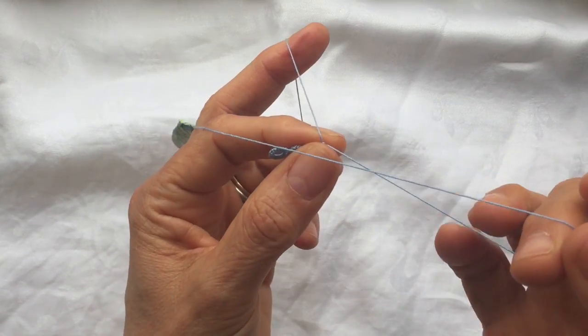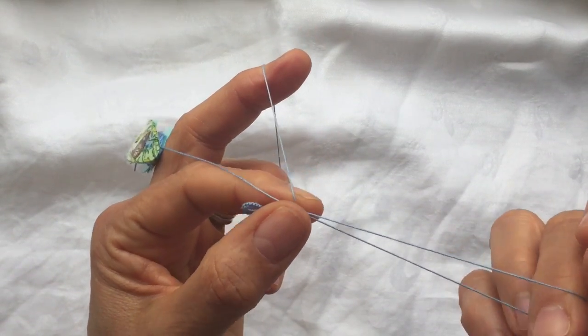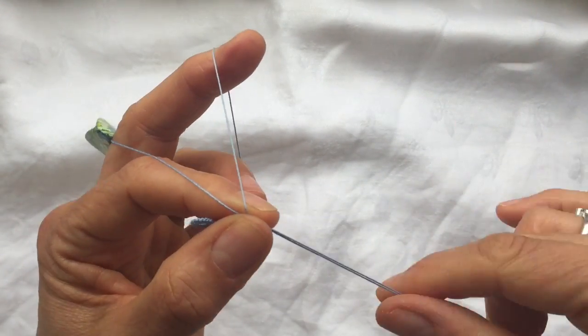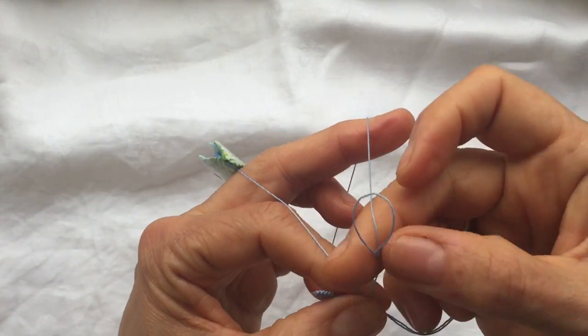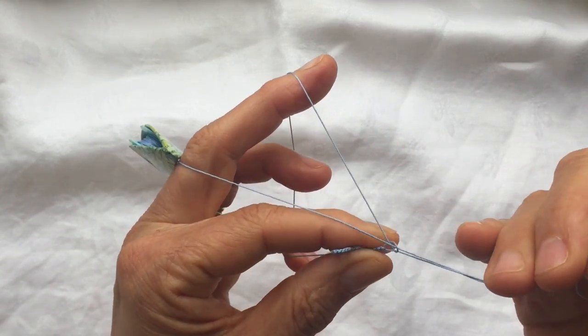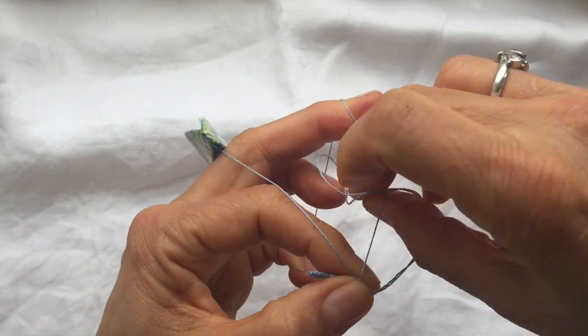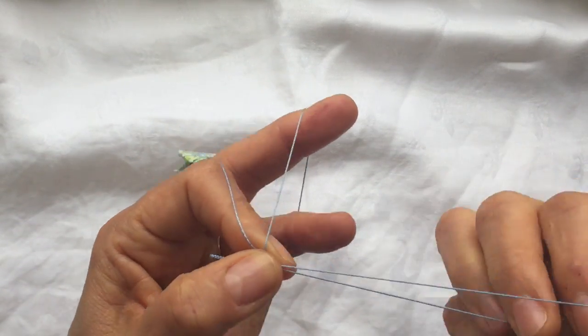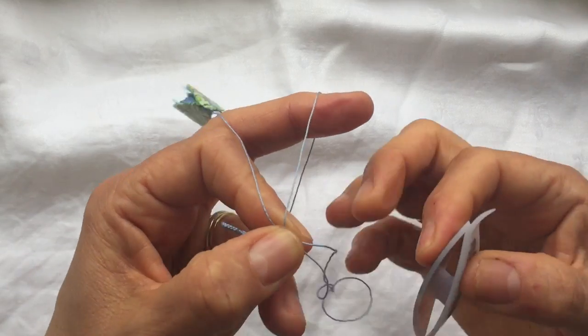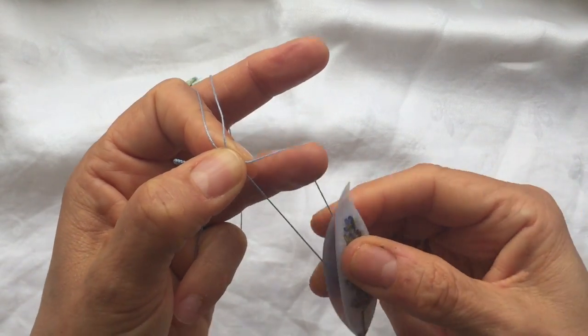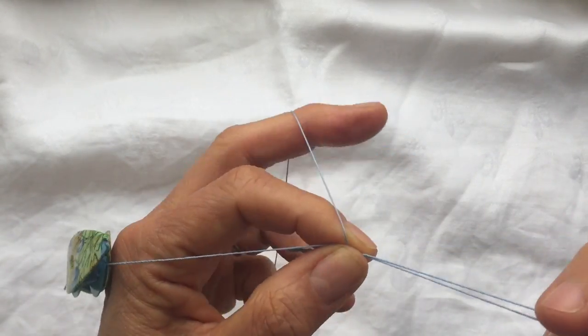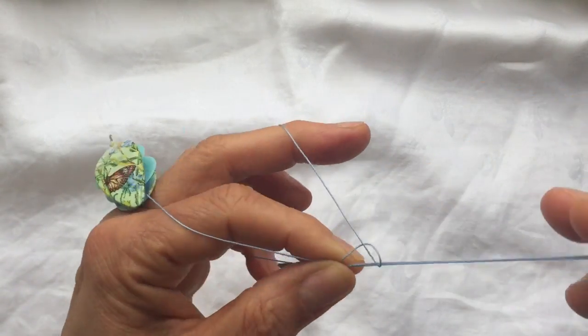And I'm going to make the first stitch finger tatted but you don't need to. You can start straight away with a shuttle if you wish, or you can make all your stitches with just finger tatting. But I really like to use a post shuttle. Put it on the loop and make my stitches with that. So one, I've got six more to make.